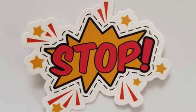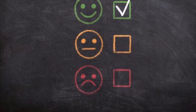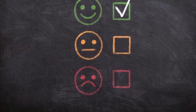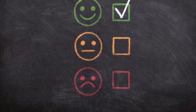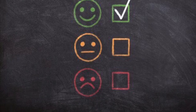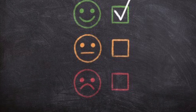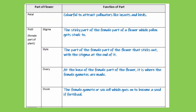Before we move on, I'd like you to pause, check you've filled out all the functions for the female parts of the flower, and then we're going to mark those before moving on to the male part. You don't have to have written exactly the same thing, but you do need the same main details. If you're missing anything, just add it on when you mark it.